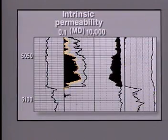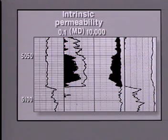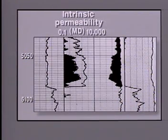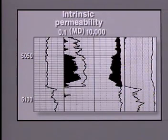The permeability scale on this display is logarithmic, and ranges from 0.1 to 10,000 millidarcies. Total absolute or intrinsic permeability is indicated by this solid line, and the portion of this absolute value which is effective hydrocarbon permeability is darkened.